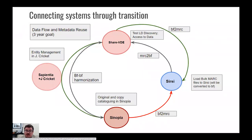This diagram attempts to capture key connectors for data going to new and current systems. Here we have a BibFrame-based cataloging editor with Sinopia, an entity management tool with LD cricket, a data source and discovery tool with ShareVDE and the Sapiensia knowledge base, and ways to connect to our MARC-based systems. Getting these things put together would be a major achievement — not a simple one.